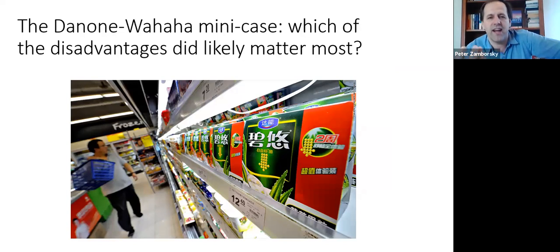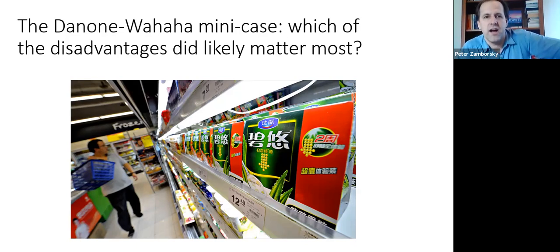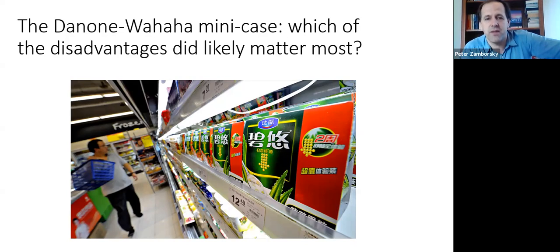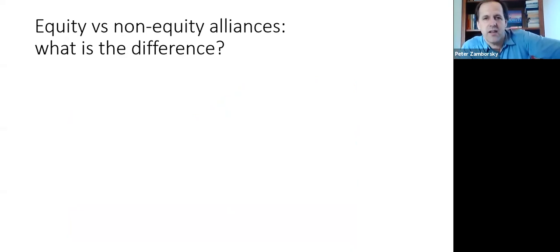An example of an alliance going sour is the French food producer Danone, which had a number of joint ventures with Chinese company Wahaha. It was initially perceived as successful, but later the partners got into quarrels over financial issues allegedly being camouflaged by Wahaha, while the Chinese partner accused Danone of not committing enough to the ventures. Eventually the companies ended up in a lawsuit — a kind of divorce — that dragged on for years. Even six years after the initial disagreement, Danone cited this as one of their major headaches in international operations.